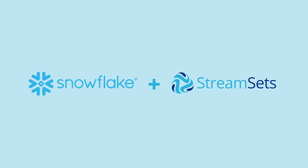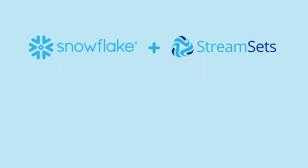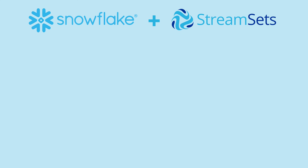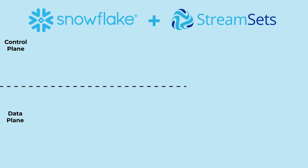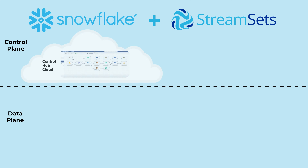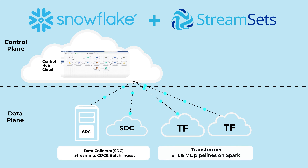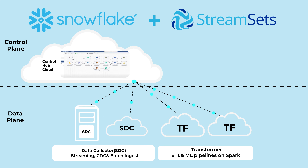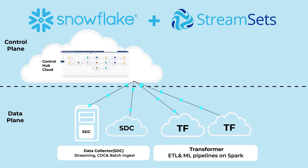What will happen if we put Snowflake and StreamSets together? In StreamSets, we've separated our control plane and data plane. StreamSets DataOps platform coordinates workloads across the hybrid environment. Today, there are various engines that StreamSets supports: the Data Collector Engine and the Transformer Engine.